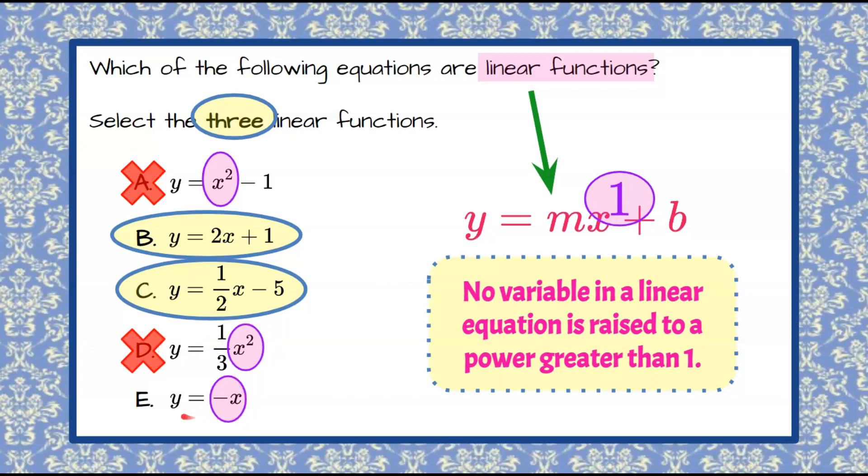And then our last choice, E, negative x with that invisible 1 exponent, and that is our third linear function. So our correct answer choices are B, C, and E. These are our linear functions.